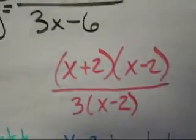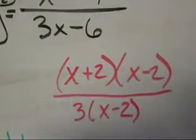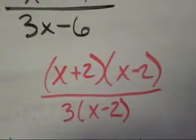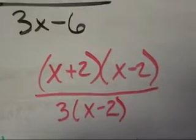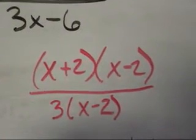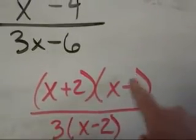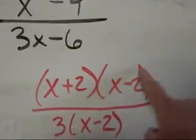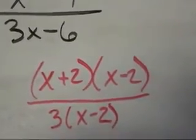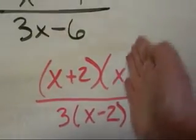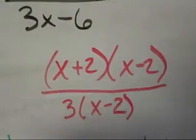So it factors into y equals x plus 2, x minus 2 over 3 times x minus 2. And the first thing I notice are the x minus 2s that are shared in the top and the bottom.